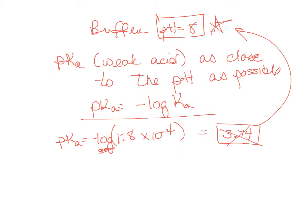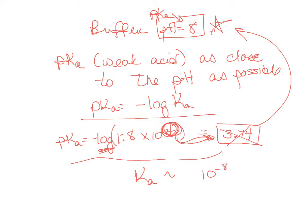When you take the log of a value, you're really taking the exponent and bringing it down. The exponent was close to 4, so our pKa value is going to be close to 4. To save time: since you want pKa to equal pH, you're looking for a Ka value on the order of 10 to the minus 8. There's only one answer with a Ka exponent of minus 8.